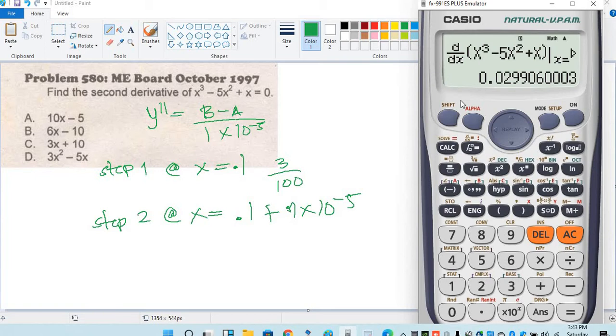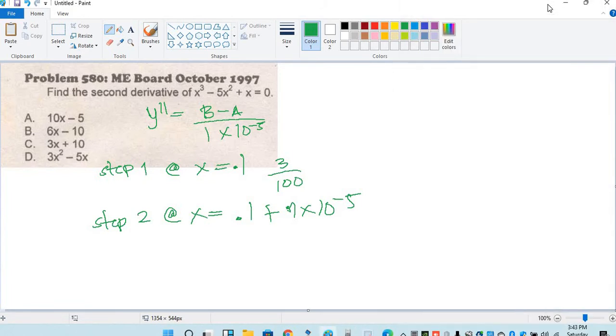Equal, store it to B, shift store B equal. The result is 0.02, store to B. This is store A.